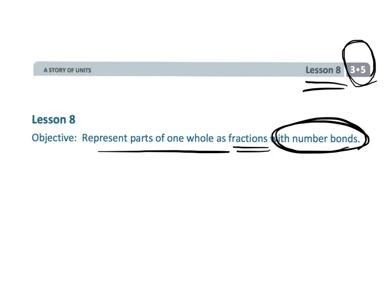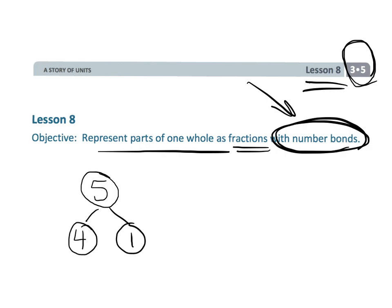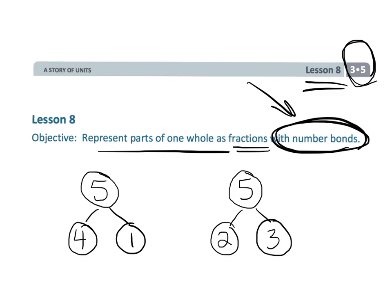Now, parents and teachers, you guys probably have not experienced number bonds when you were growing up. The idea of number bonds is to help students understand that fractions, and really numbers in general, can be decomposed into smaller parts. For example, the whole number five can be decomposed into four plus one, or two plus three. These are number bonds showing a couple of different ways that five can be decomposed.